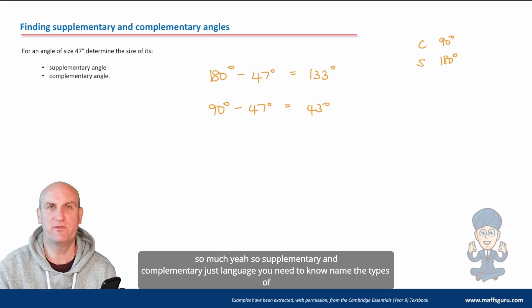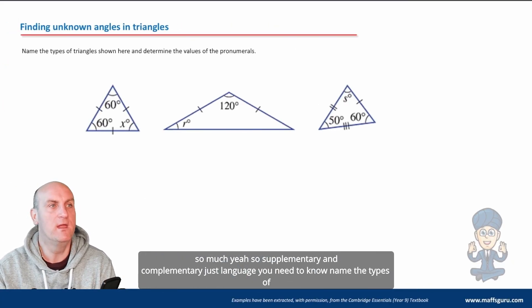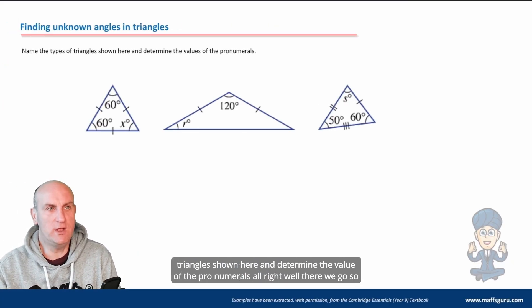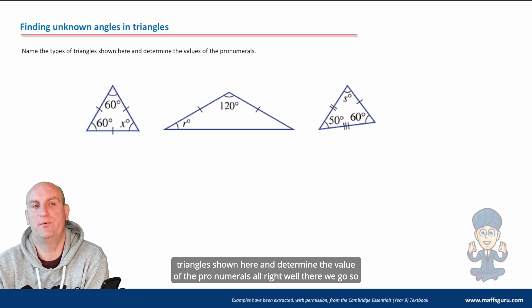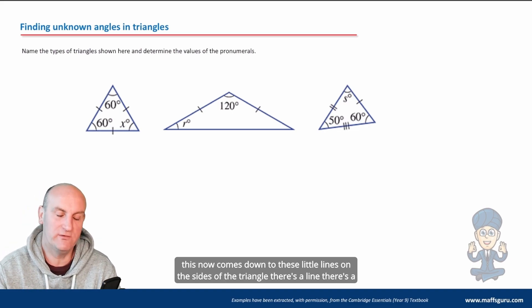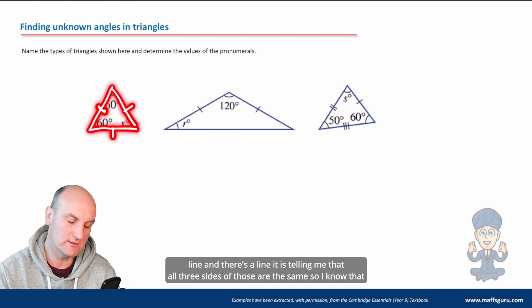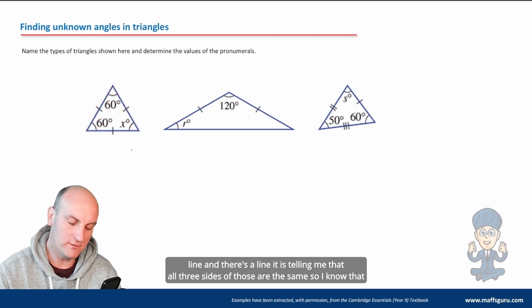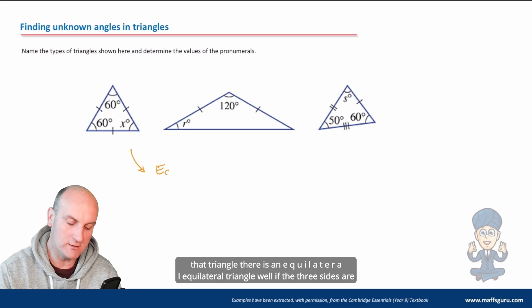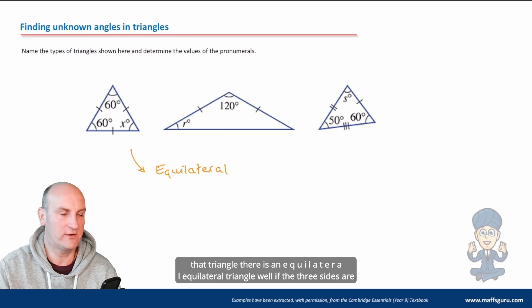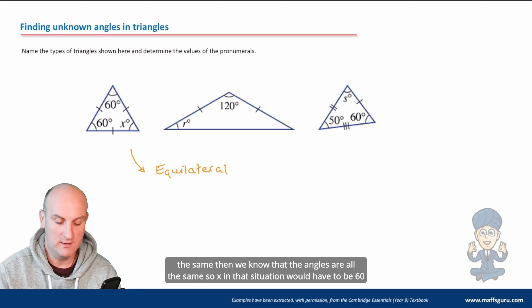Name the types of triangles shown here and determine the value of the pronumerals. Well there we go, so this now comes down to these little lines on the sides of the triangle. There's a line, there's a line, and there's a line. It is telling me that all three sides of those are the same, so I know that that triangle there is an equilateral triangle. Well if the three sides are the same then we know that the angles are all the same, so x in that situation would have to be 60 degrees.